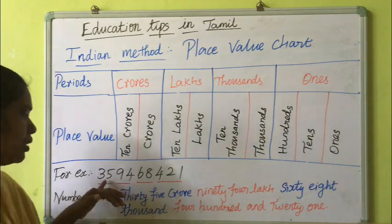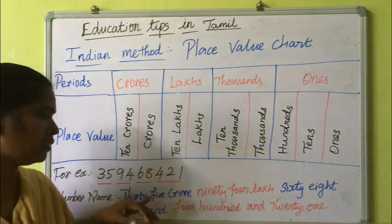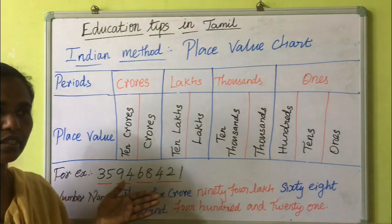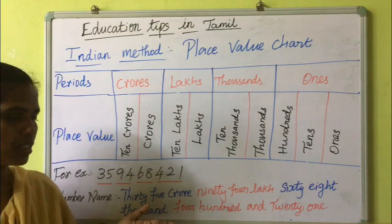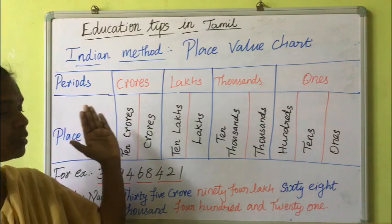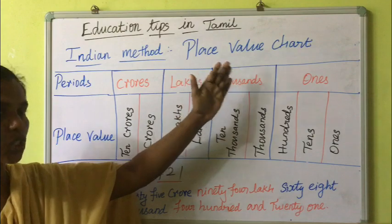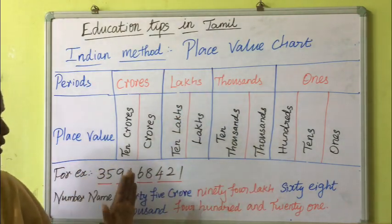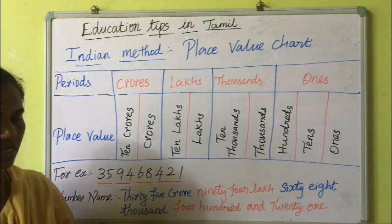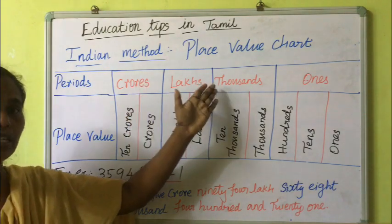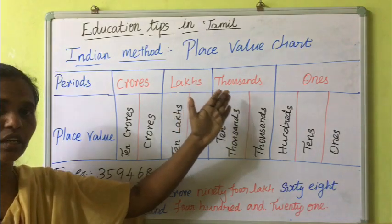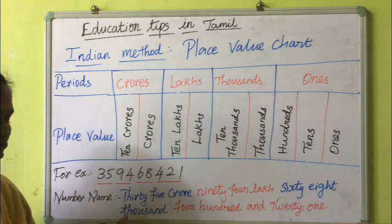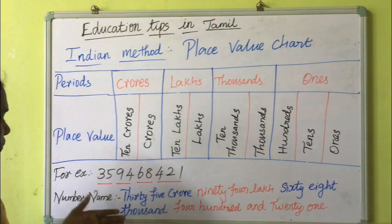For example, given a large number — how will you read this? Is it easy? No, it is very difficult to read. So if you study the place value chart thoroughly, it will be easy to write the number name. So now let's see the number name.